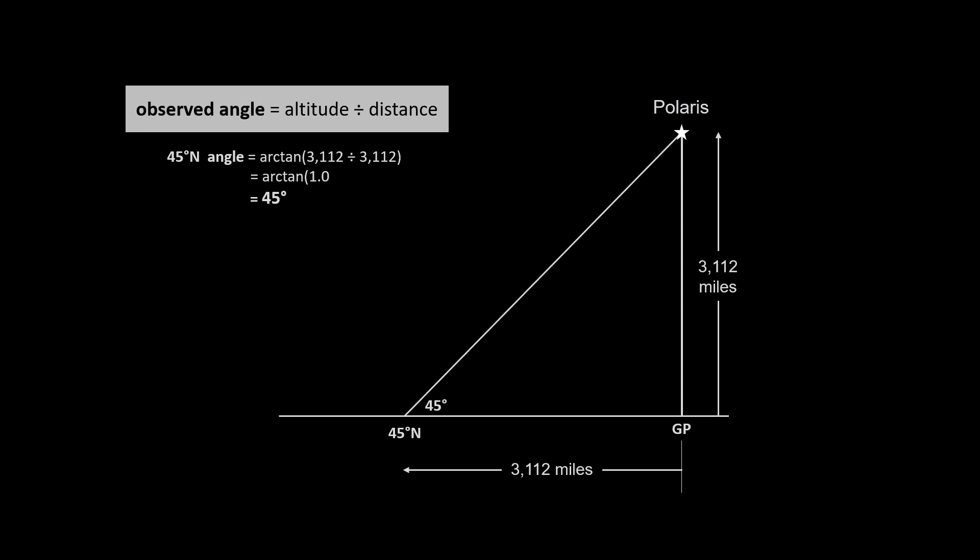Now we can do this another way by calculating for the observed angle by dividing the altitude by the distance. And again, if we use the 45th latitude, we come out with the correct answer of 45 degrees.